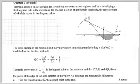This is question three. Now what we've got here is a Tasmania Jones question. So we know that Tasmania Jones is in Switzerland in this adventure. He is working as a construction engineer and he is developing a thrilling train ride in the mountains. He chooses a region of the mountain landscape, the cross section of which is shown in the diagram below.